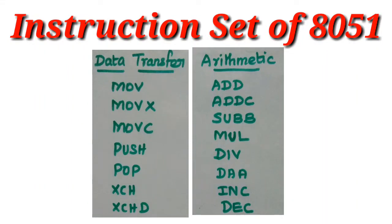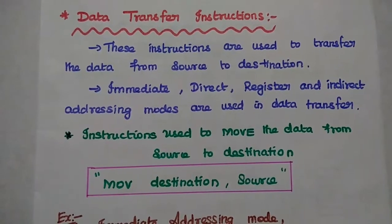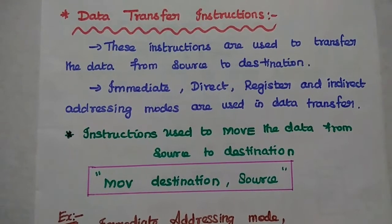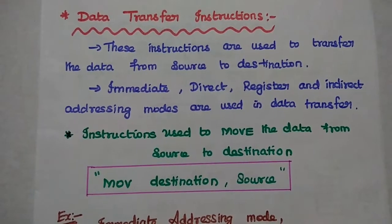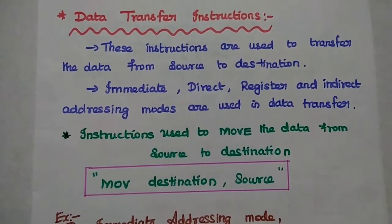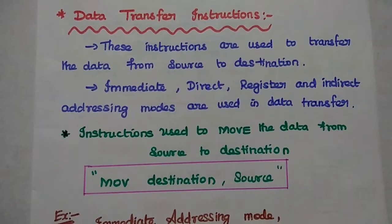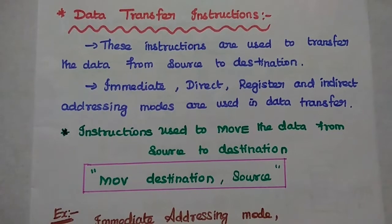Dear students, now we are going to discuss data transfer instructions and arithmetic instructions of 8051. Data transfer instructions are mainly used to transfer the data from source to destination. Immediate, direct, register, and indirect addressing modes are used in these data transfer instructions.